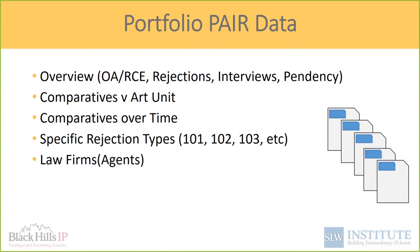The next report is portfolio PAIR data — basically rolling up the prosecution data for an entire portfolio to provide statistically viable analytics. The data is gathered for each patent rather than looked at individually, and the portfolio as a whole can be analyzed for trends, outliers, how it compares with general art unit data, how things have moved over time, and propensities towards different rejection types, broken down by classifications or art units across the portfolio.